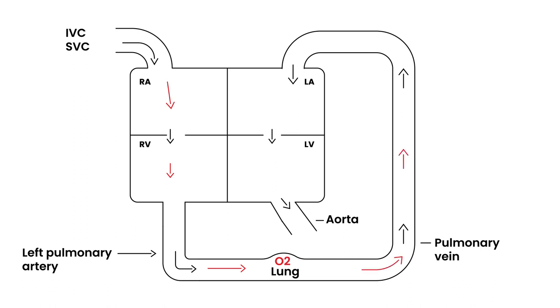Then the oxygenated blood goes back to the left side of the heart where it's pumped out via the aorta into the circulation, so that the oxygen can then travel to different parts of the body. And then the cycle just keeps going.